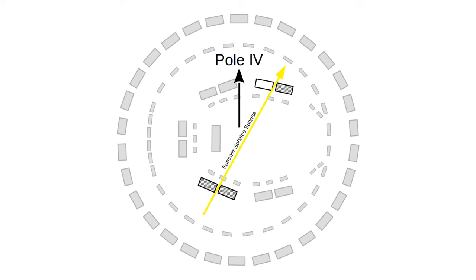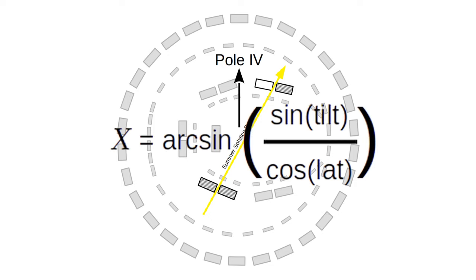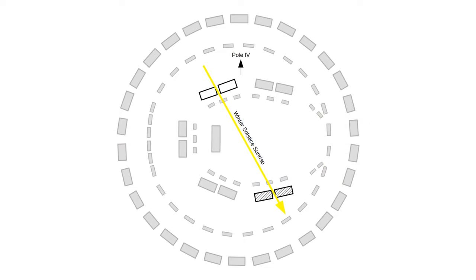Today, Stonehenge is located at a latitude of around 51.2 degrees. With the formula that we have designed for our method, we can calculate both the summer and winter solstice in relation to the ancient equinox of pole 4. It appears that there is an incredible fit in this situation.